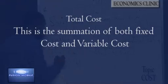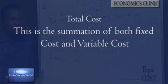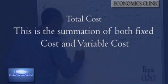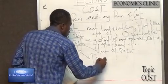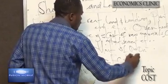Then we move to total cost. Total cost is the summation of both fixed cost and variable cost. And it has its formula to be used. Total cost equals fixed cost plus variable cost.